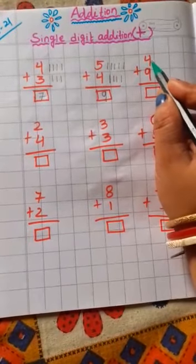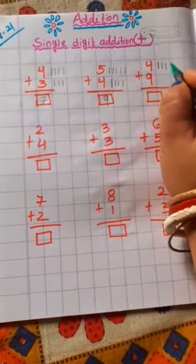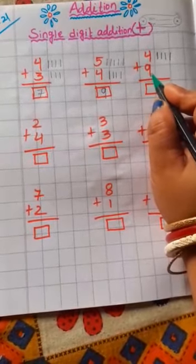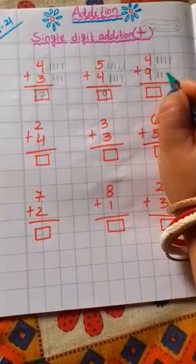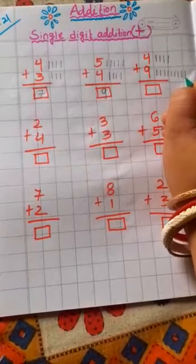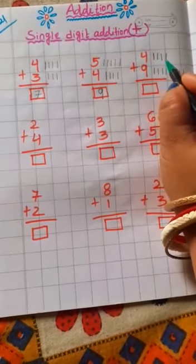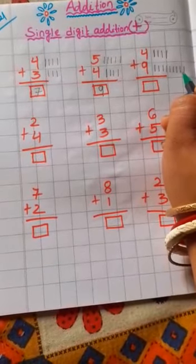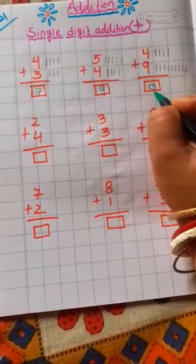Now next number. Which number is this, children? 4. Now you draw here 4 lines: 1, 2, 3, 4. Now, which number is this children? 9. So you draw here 9 lines: 1, 2, 3, 4, 5, 6, 7, 8, 9. Now children, count all the lines together: 1, 2, 3, 4, 5, 6, 7, 8, 9, 10, 11, 12, 13. Your answer is 13. You write here 13. 4 plus 9 is equal to 13.